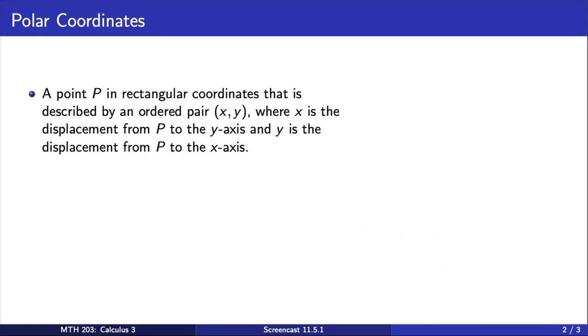A point P in rectangular coordinates is described by an ordered pair (x, y), where x is the displacement from P to the y-axis, and y is the displacement from P to the x-axis.